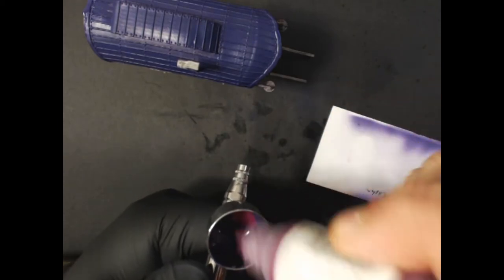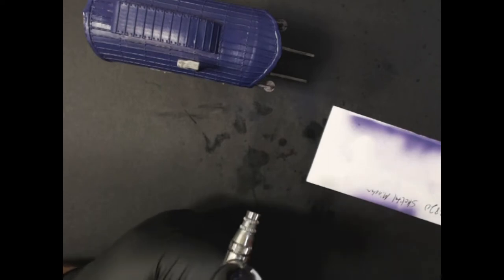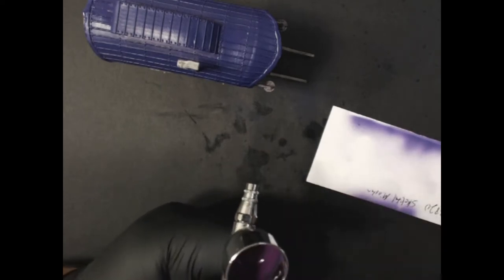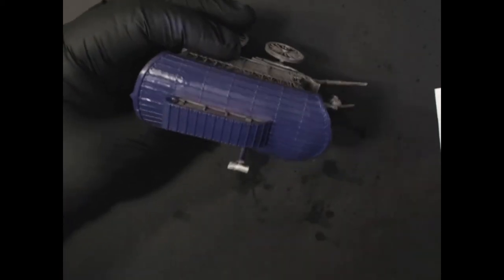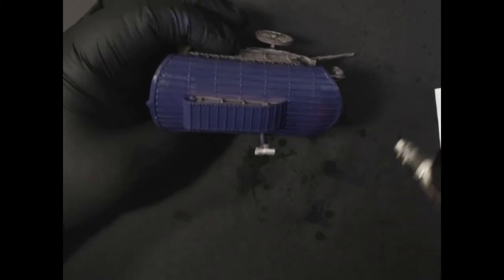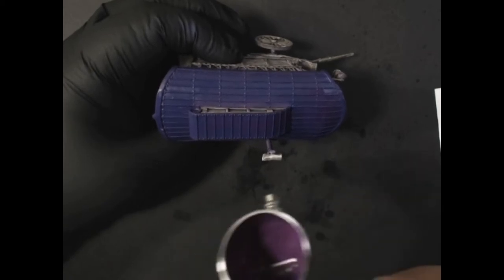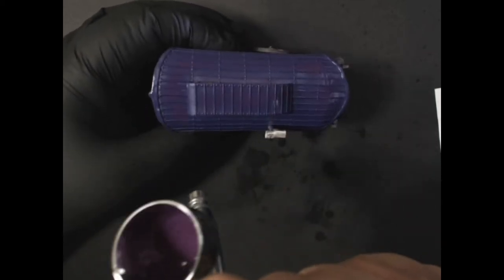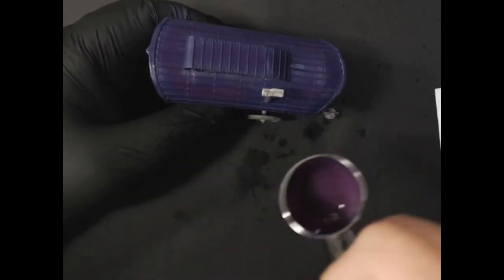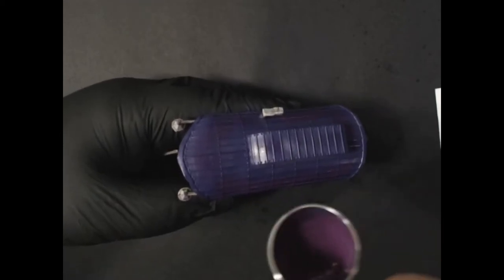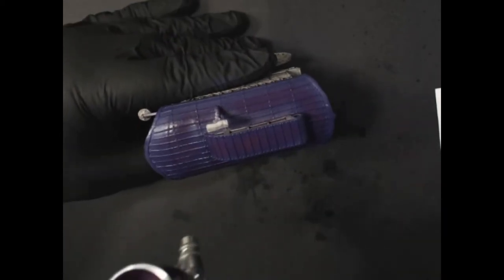Next up we've got some Vallejo Model Color Violet Red. And I've dumped out most of the previous color and added some of this in just to brighten it up a bit. So it's kind of a mid-tone between the two colors. And I'm trying to keep this toward the center of each section. Just do thin coats, don't let it build up. And just use several passes until it's the color and the intensity that you want it to be. Turn my light up a little bit so you can see.